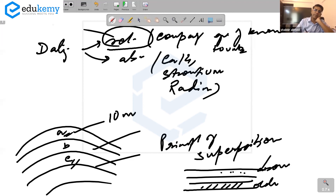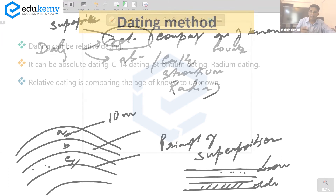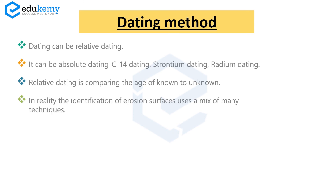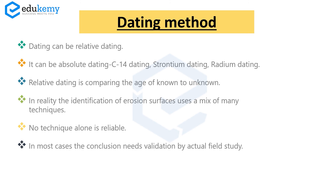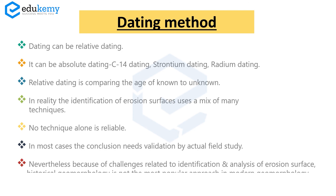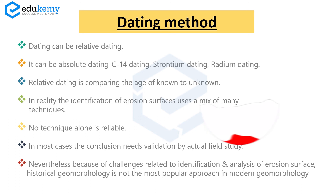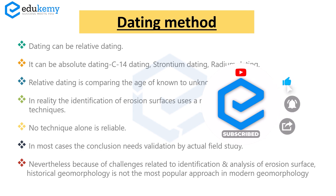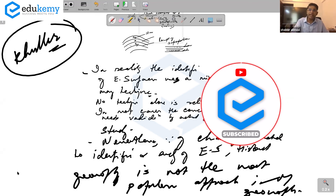In reality, identification of erosion surfaces uses a mix of many techniques — no single technique alone is reliable. In most cases the conclusion needs validation by actual field study. Because of the challenges related to identification and analysis of erosion surfaces, historical geomorphology is not the most popular approach in modern geomorphology.